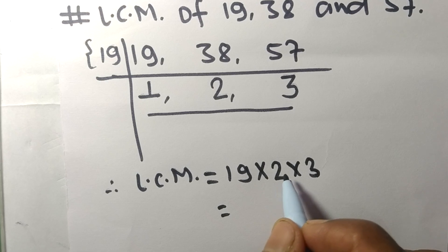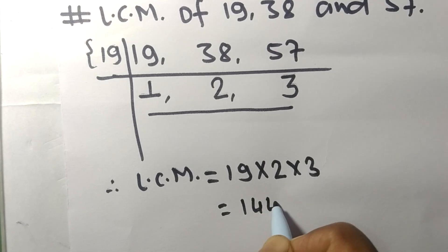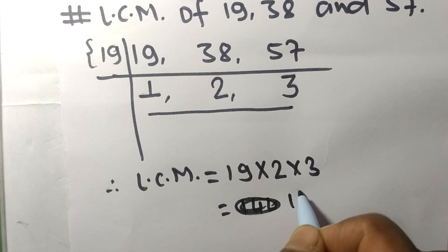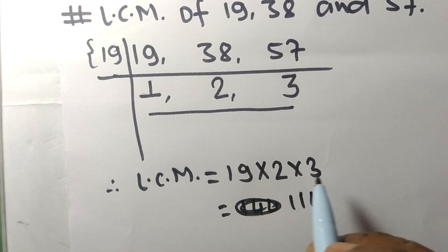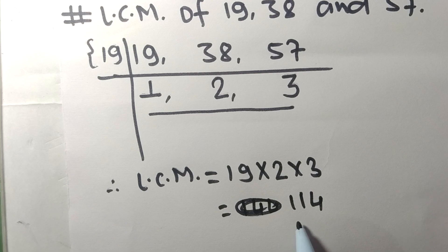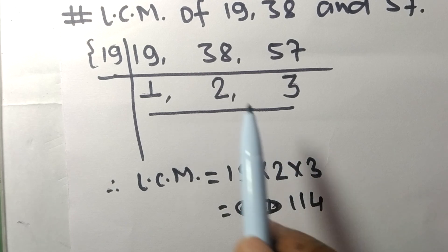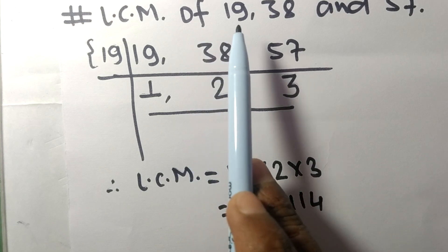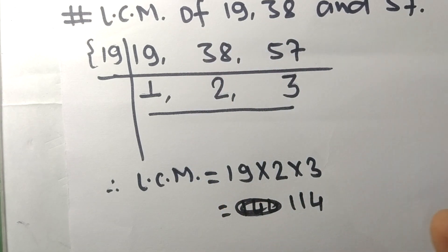38 times 3... by multiplying all these numbers we got 114. So 114 is the LCM of 19, 38 and 57. This much for today and thanks for watching.